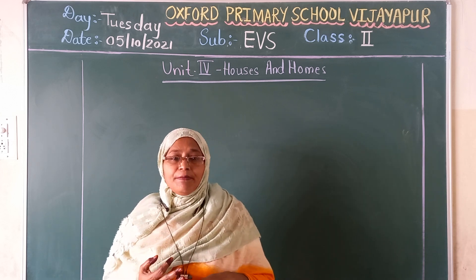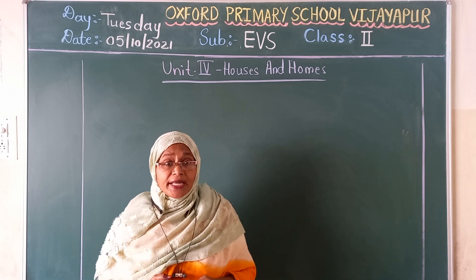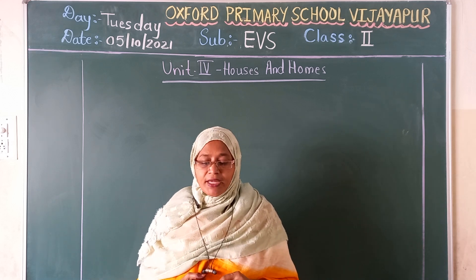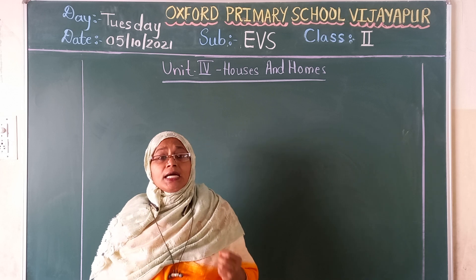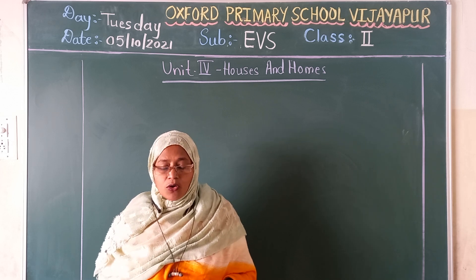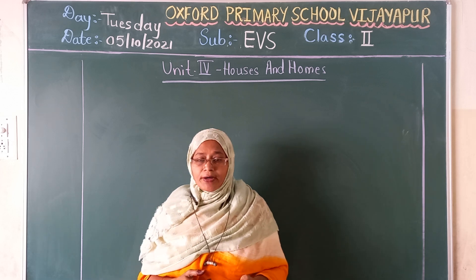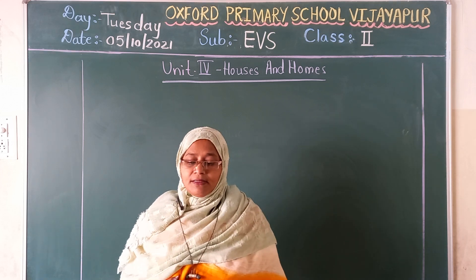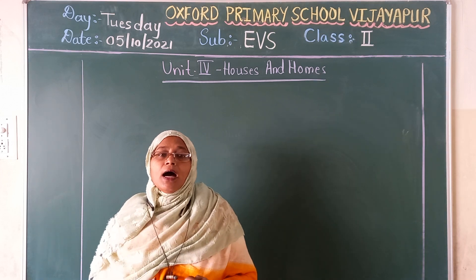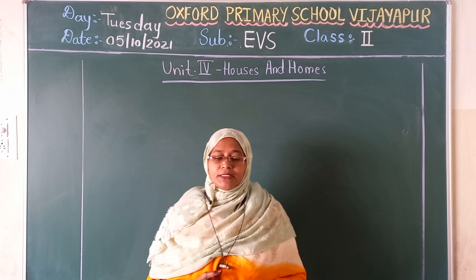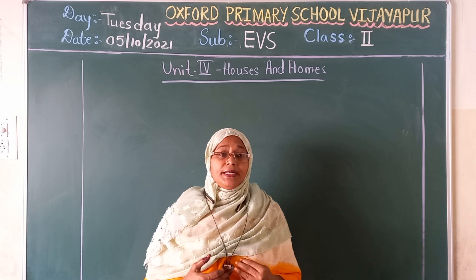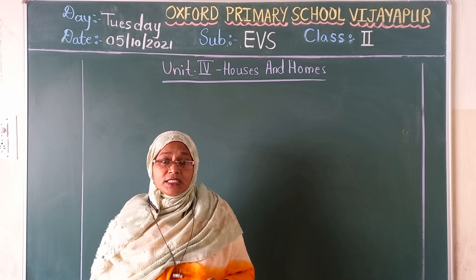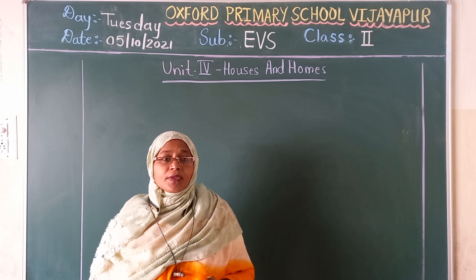Which are the words? Important, bonding, memories, living, bungalows, garden, lawn, cottage. Then independent, flags. Next one, chawls, apartments, hut, tent, another, villages, slum, area.